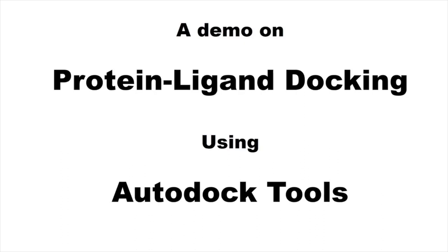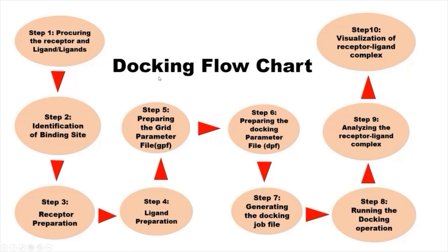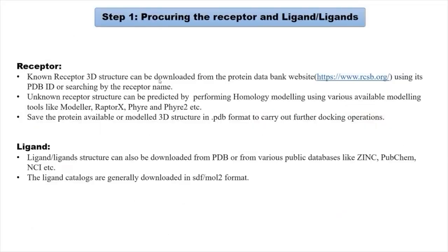Welcome to the demo on protein-ligand docking using AutoDock tools. I will explain the steps involved in docking a ligand to a receptor using AutoDock tools, covering 10 steps. The first step is procuring the receptor and the ligand. The receptor's 3D PDB structure can be downloaded from the Protein Data Bank in PDB format. If the structure is not known, it can be predicted using software like Modeler, RaptorX, or Fire2. For the ligand, it can be downloaded from PDB or public databases like the ZINC Database, SpiderCam, PubChem, or NCI, and saved in SDF or MOL2 format.